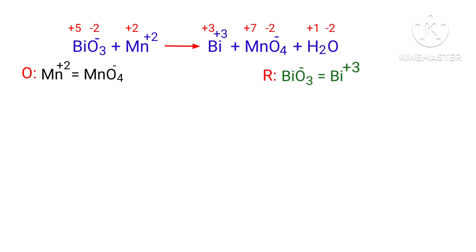In the ion-electron method, one reaction is divided into two half-reactions, which are then balanced separately and added together.